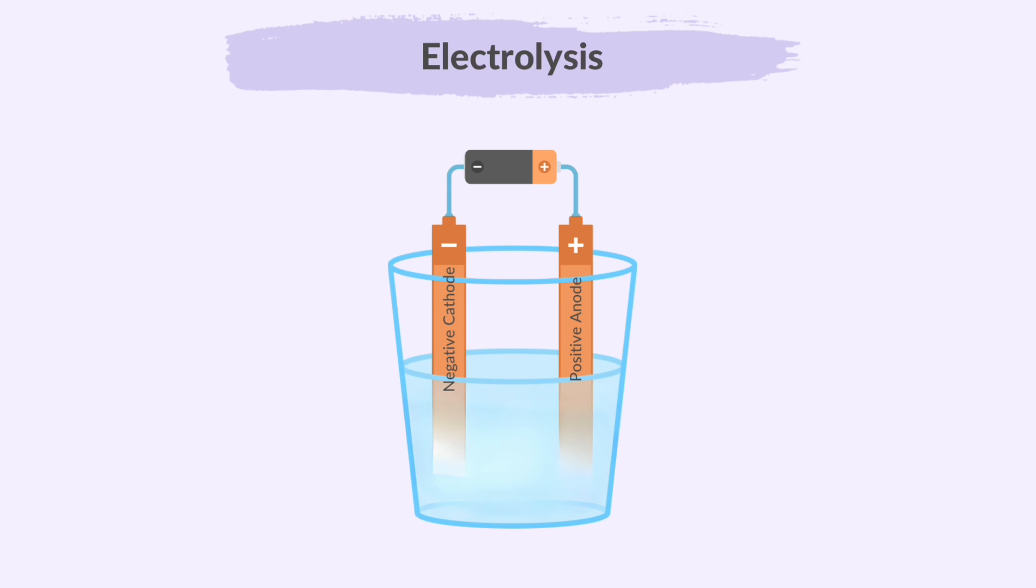During electrolysis, an electric current is required to flow through the circuit. At the power supply, it is the electrons that carry this electric charge through the external circuit. The electrons move from the power supply to the cathode, making it negatively charged. The anode becomes positively charged as it loses electrons.